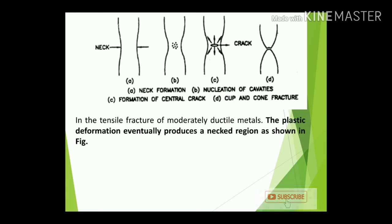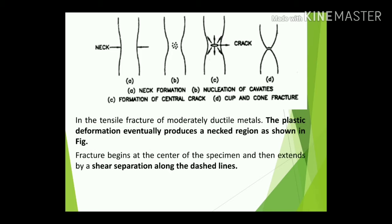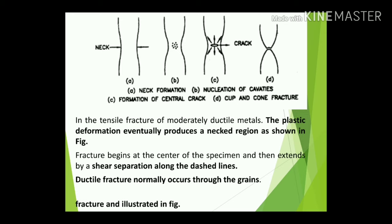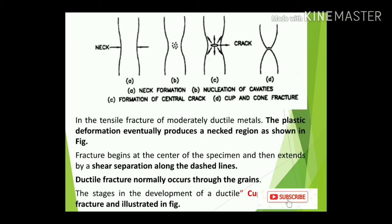Finally, in Figure D, the material converts into two or more parts in the shape of a cup-and-cone fracture. In tensile fracture of moderately ductile materials, plastic deformation produces a necked region as shown in the figure. Fracture begins at the center of the specimen and extends by shear separation along the dashed line. Ductile fracture normally occurs through the grains.